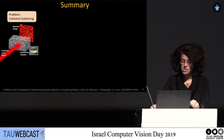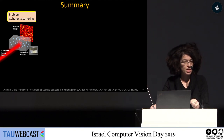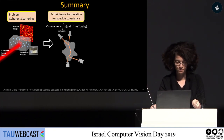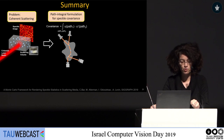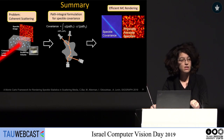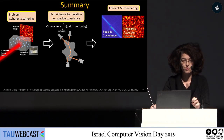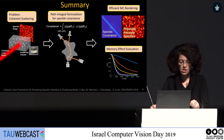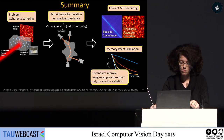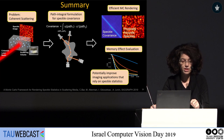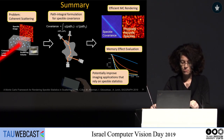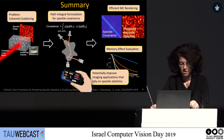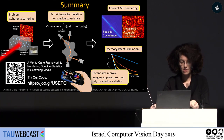To summarise: we considered the problem of coherent scattering, and speckle images captured have strong statistical properties. We formulated a path-integral formulation for speckle covariance, which enabled an efficient Monte Carlo rendering for covariance and physically accurate speckle patterns. Using this, we can compute the exact extent of the memory effect, which can potentially improve imaging applications that rely on speckle statistics. So next time you want to simulate speckles, you can use our code. Thank you.